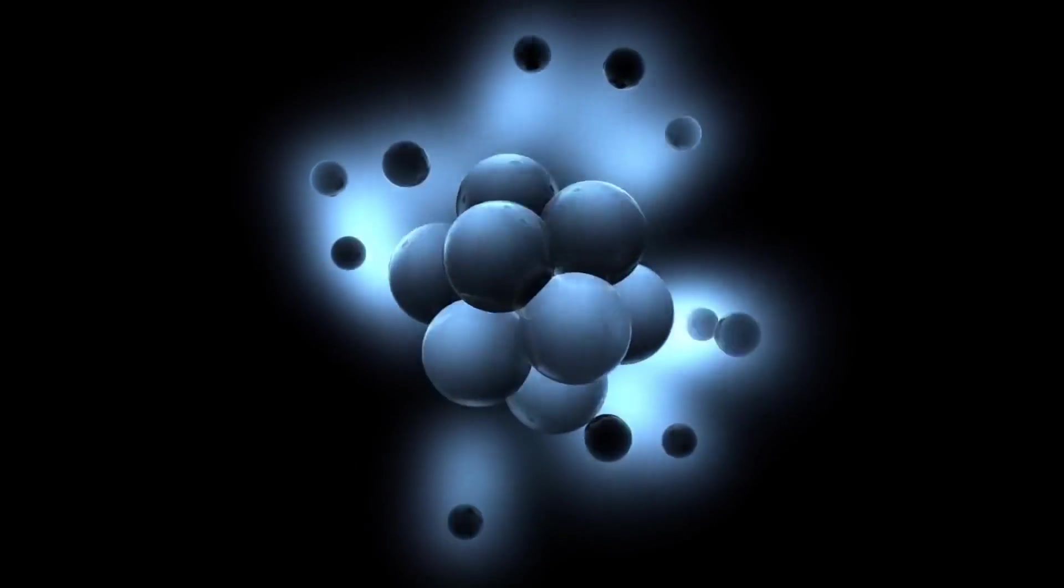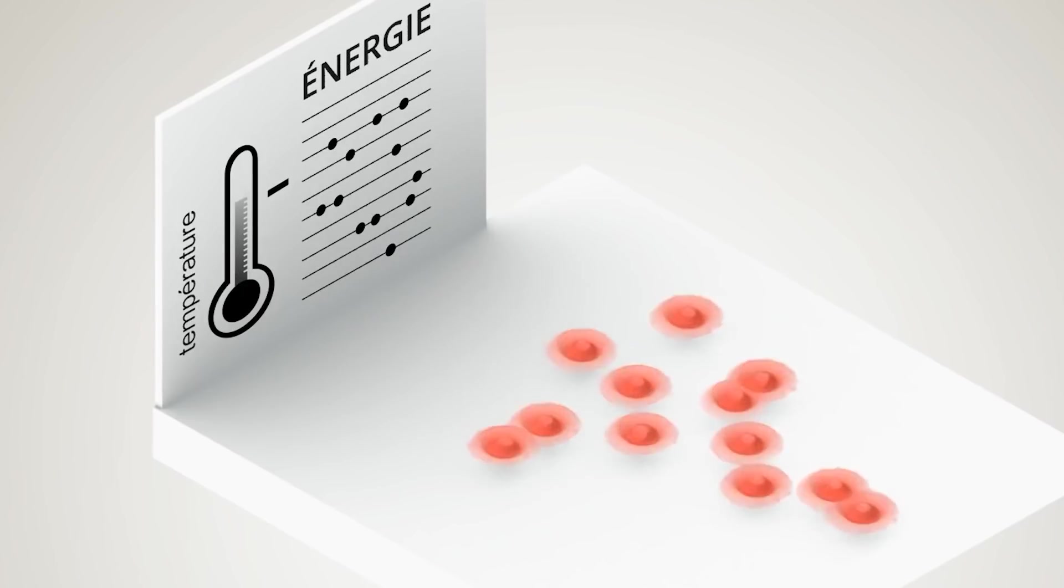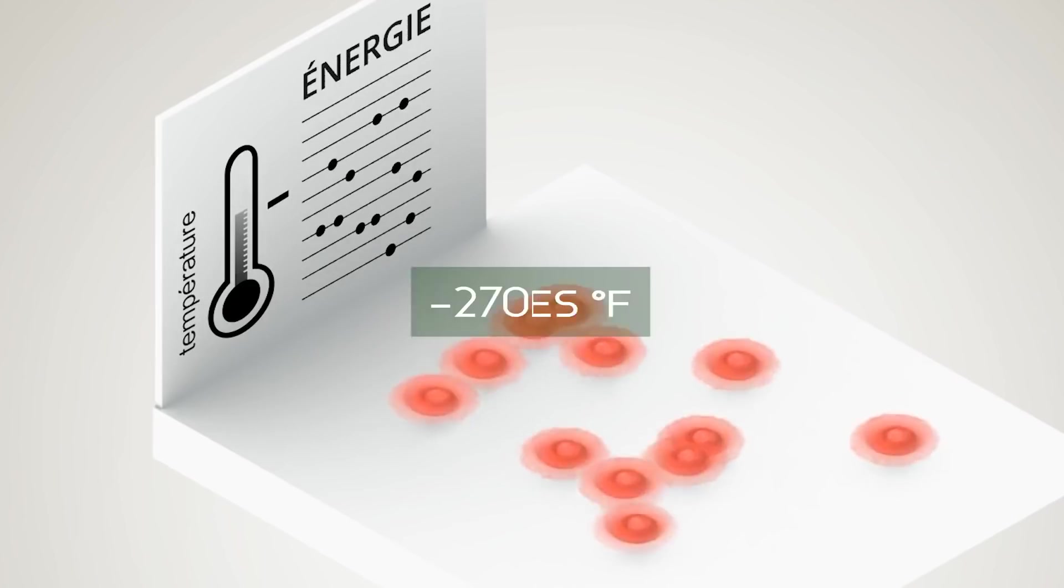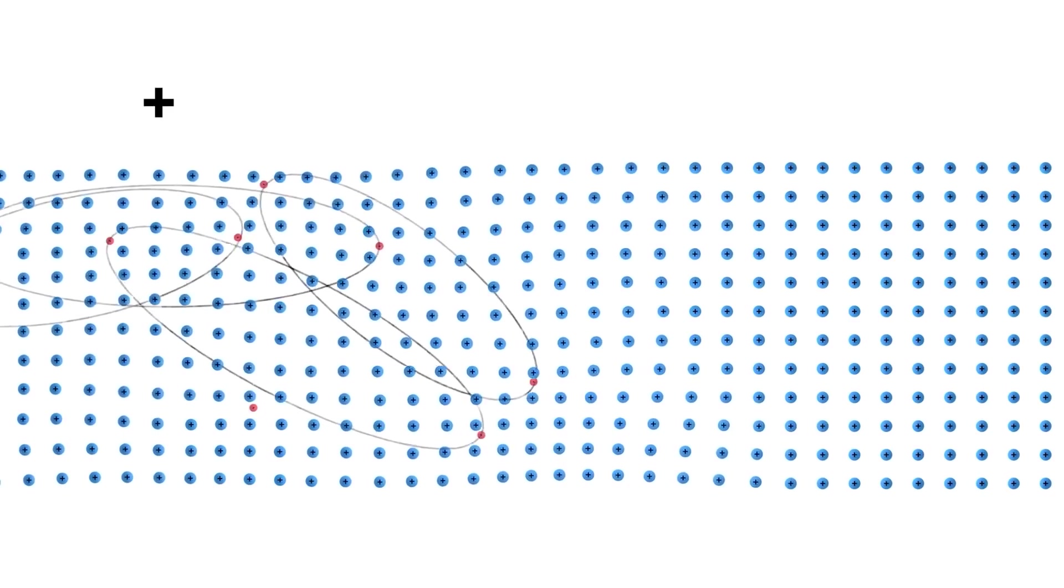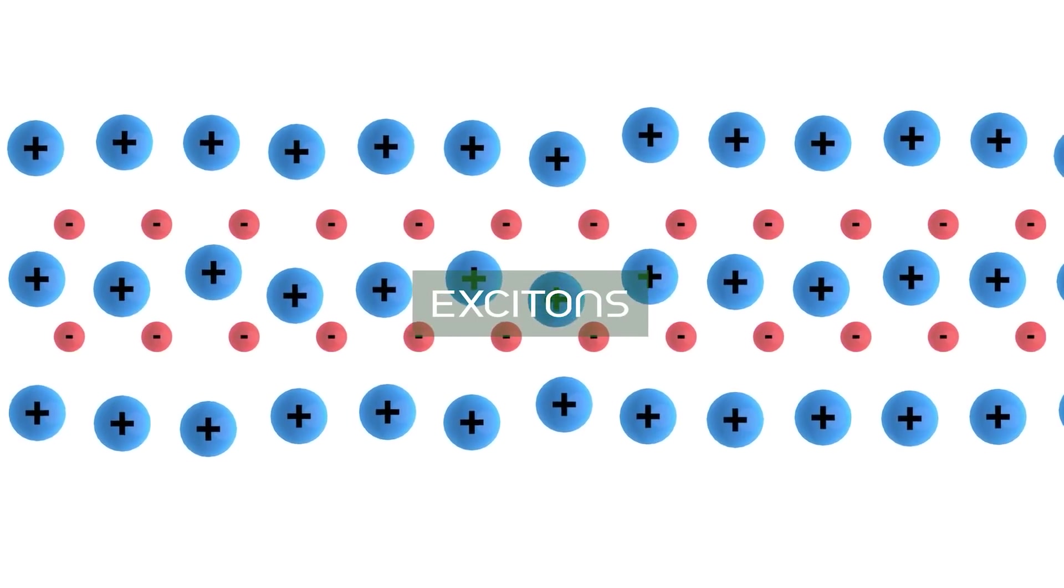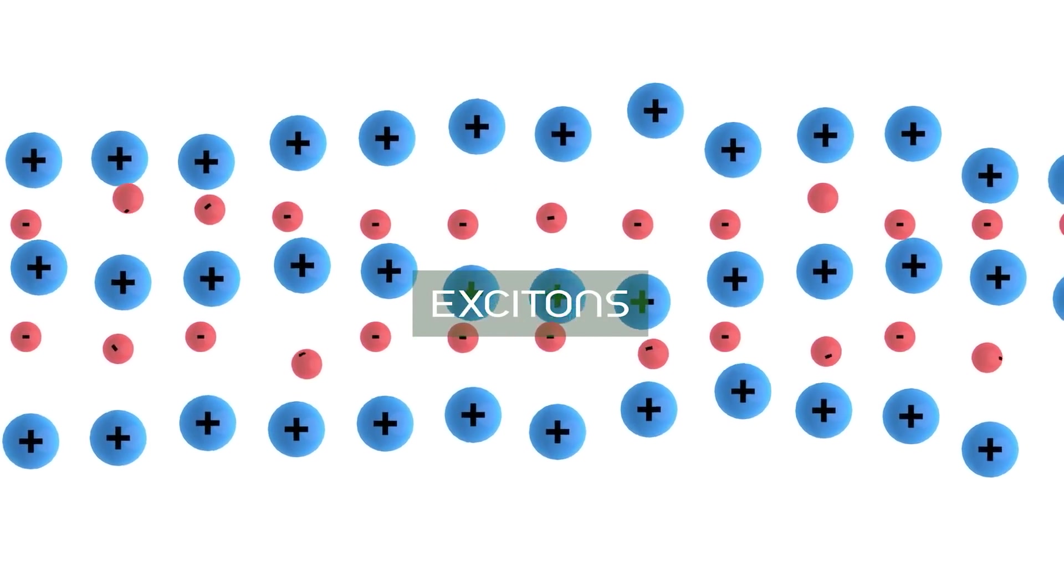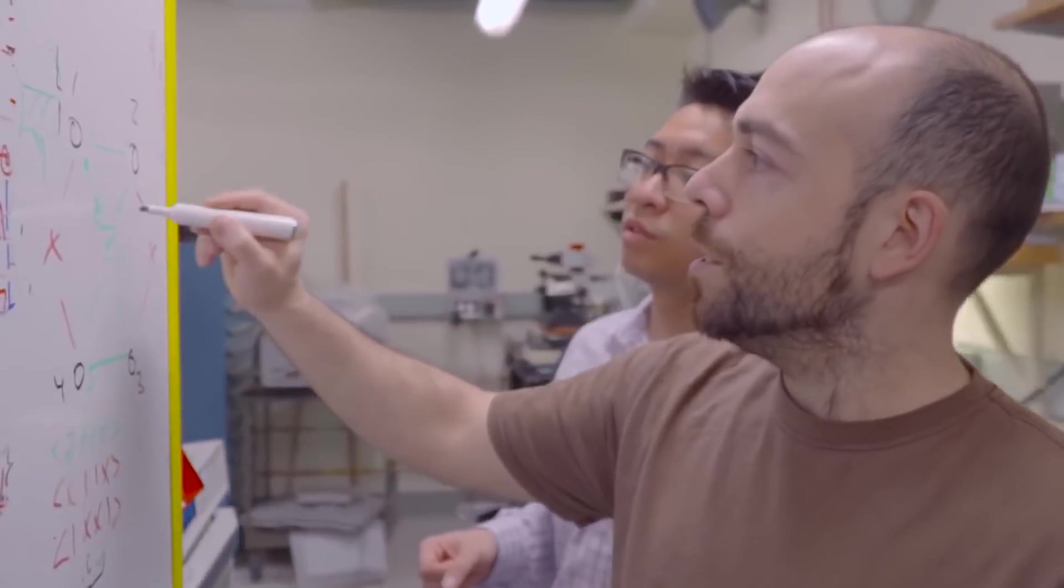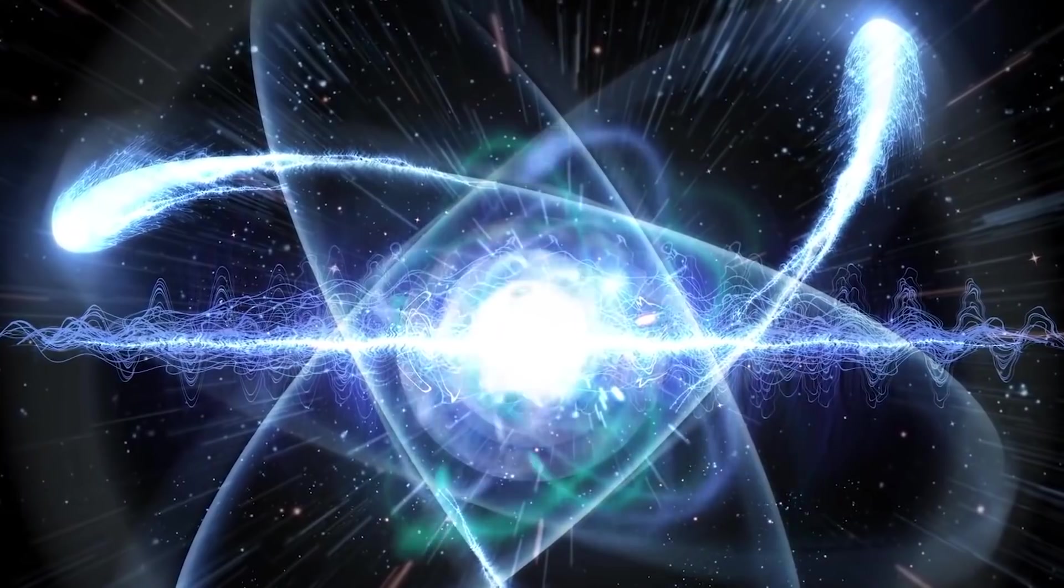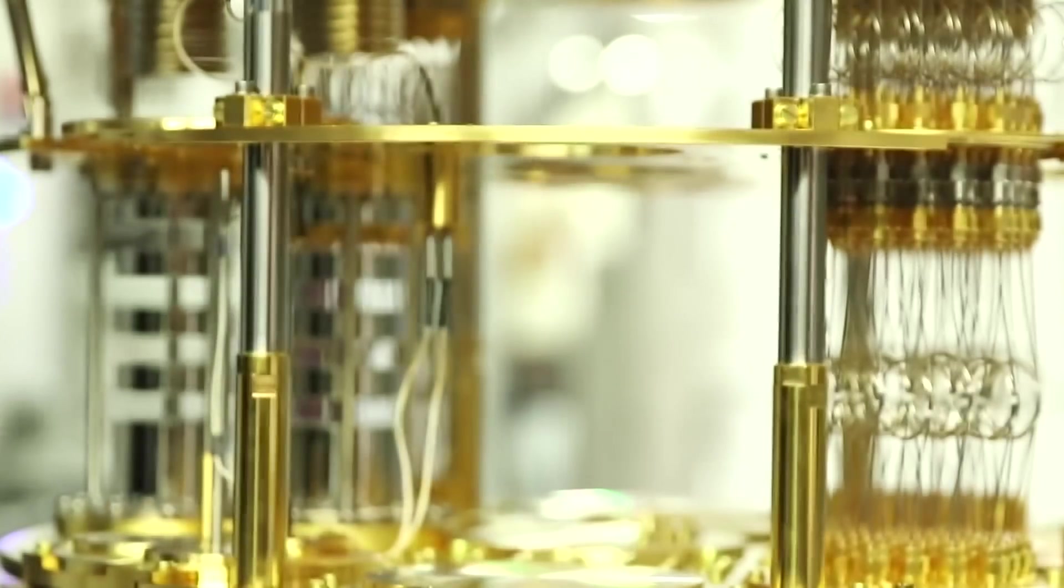For an exciton to condensate, it must be created from a lattice of particles and then cooled down to below minus 270 degrees Fahrenheit. It is then coaxed to form particle pairs known as excitons. They then make these pairs become entangled. Because of the complexity of this method, scientists have only been able to make excitons condensate a few times. Now, enter the quantum computer.